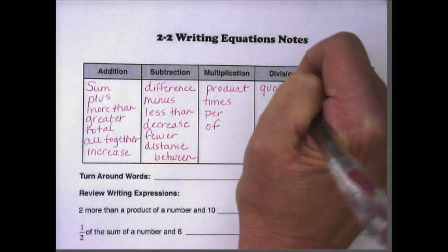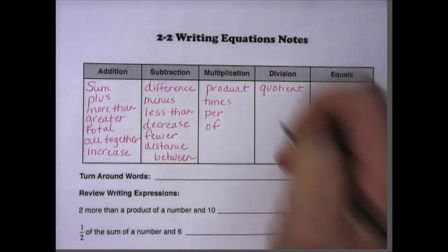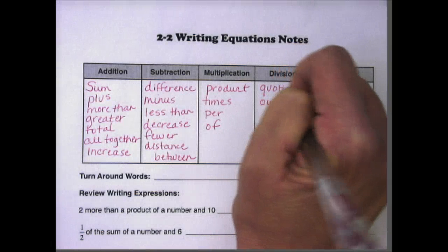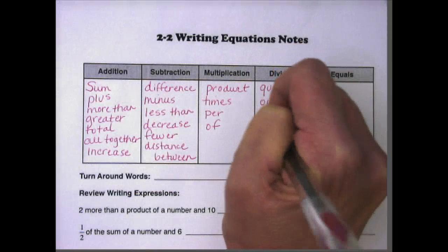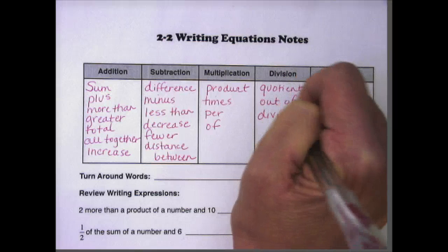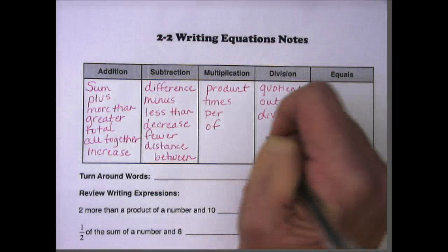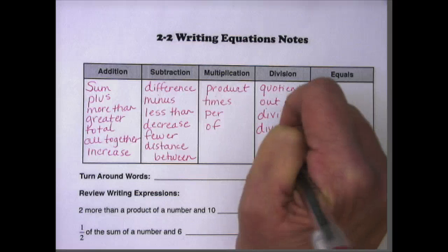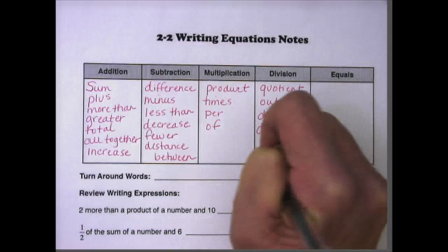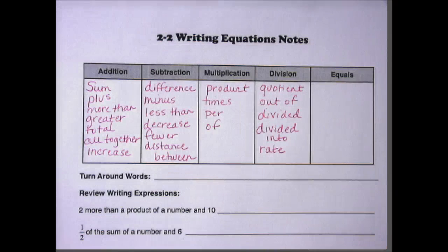For division, quotient is the solution to a division problem, out of, divided, or divided by, divided into, and the word rate.